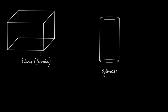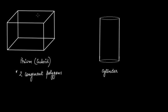We know that in a prism the base and the top surface are two congruent polygons. In this case of a cuboid, this is a rectangular face and this is also a rectangular face. So we have two rectangular faces that are congruent, and these two surfaces are actually parallel.